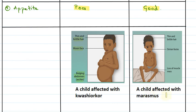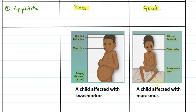Here is a child affected with Marasmus. We can see the child has thin and brittle hair and simian faces — where the face more or less resembles the face of apes or monkeys. This kind of face is called simian face. There is also loss of muscle mass in Marasmus.